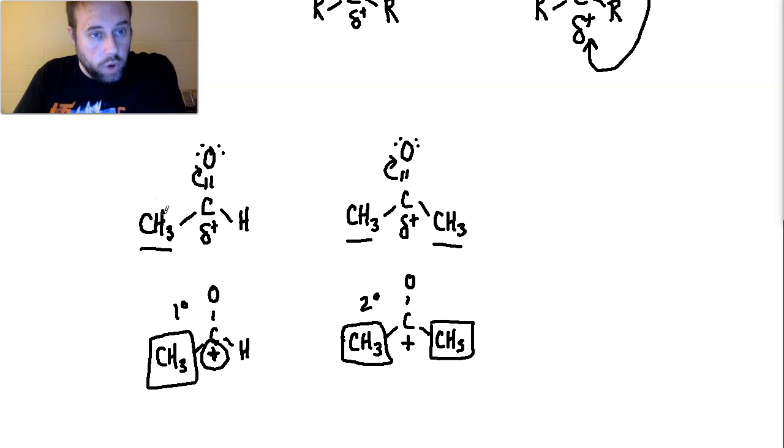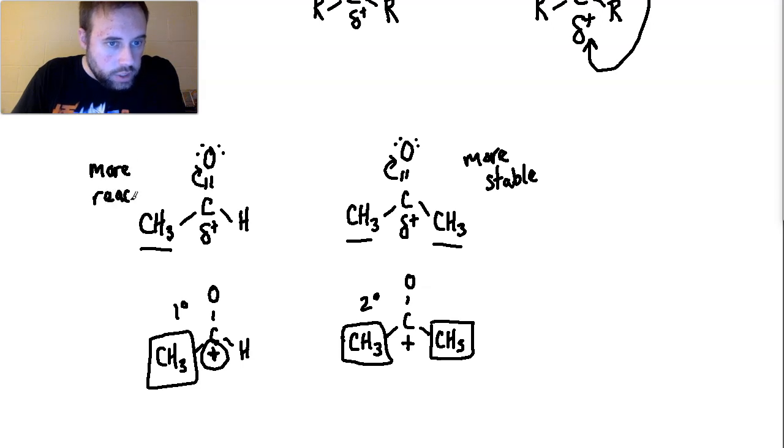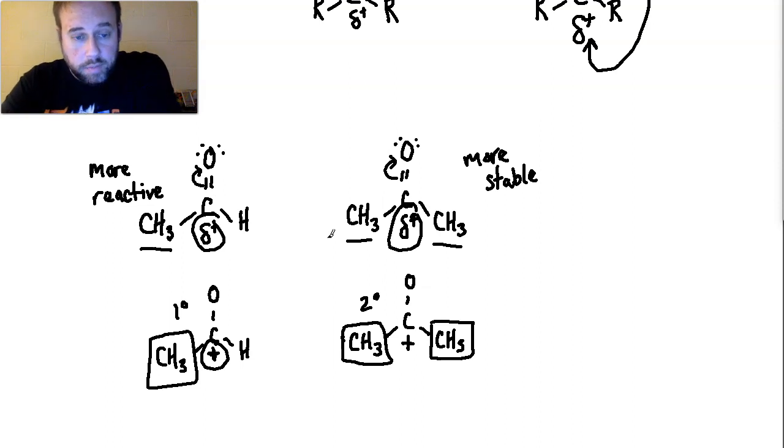And so what does that mean? Well, we know that if you have more hyperconjugation, you're going to be more stable as a general structure. And then if you have less hyperconjugation, you're going to be less stable. And a pairing with less stable is what? More reactive. If something is less stable, generally speaking, it is more reactive. And this is why aldehydes are more reactive than ketones, because they do not get as much hyperconjugation in that partial positive state as the ketones do. And so this partial positive is a little more partially positive than this one is. And that's again because of the hyperconjugation.